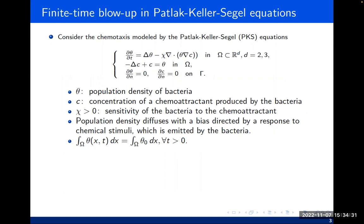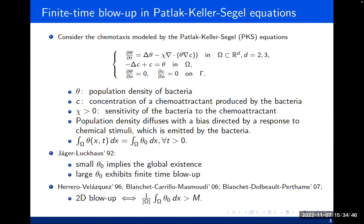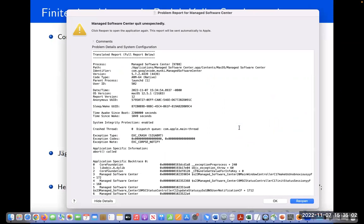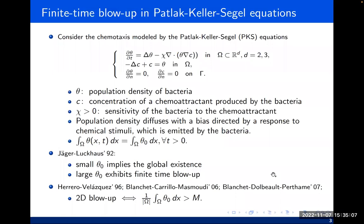With zero Neumann boundary conditions for both theta and C, one can easily show that the mass is conserved — the integral of theta always equals the initial mass for any positive time. Back in 1970, in Jäger and Luckhaus's paper, it says if we have a small initial condition, we are able to get global existence of a solution. However, if the initial distribution is large, it may exhibit finite-time blow-up. Essentially, if chi is positive, all the material approaches C, so all the mass tends to focus on one single point — you may expect a singularity that behaves like a delta function.